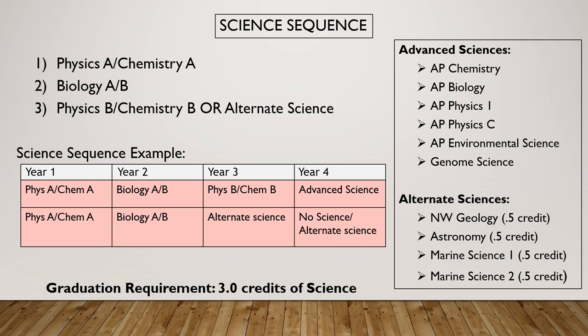Science is where things get a little more confusing, but it's a good kind of confusing because we have so many options. For most new students and those about to be freshmen, just focus on the top left of this slide. If you did eighth grade science at your middle school, you'll come in and do Phys A one semester, Chem A the next, then Biology sophomore year, and then junior year you'd start to have different science options. For those who have already taken Phys A, Chem A, and Biology in middle school, you'll have some flexibility — and we'd recommend having a conversation with your counselor, because some colleges expect a full year of physics and a full year of chemistry.